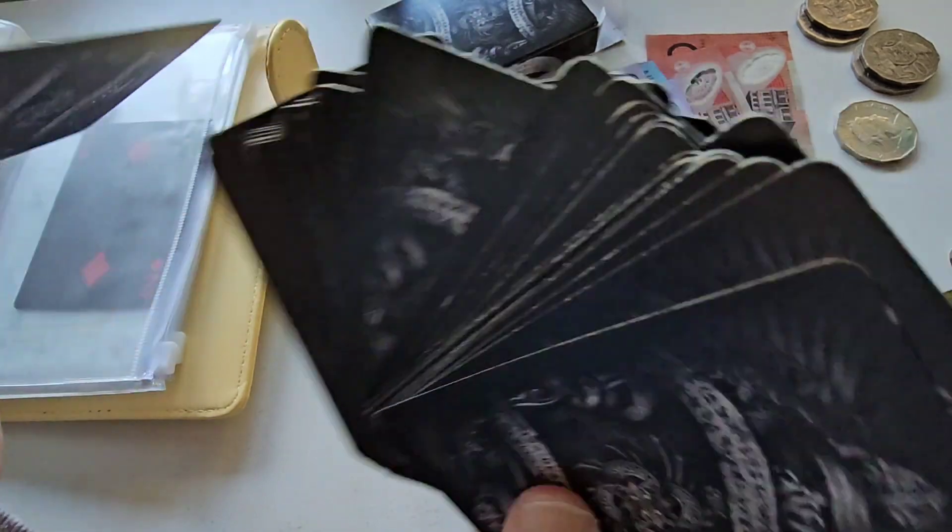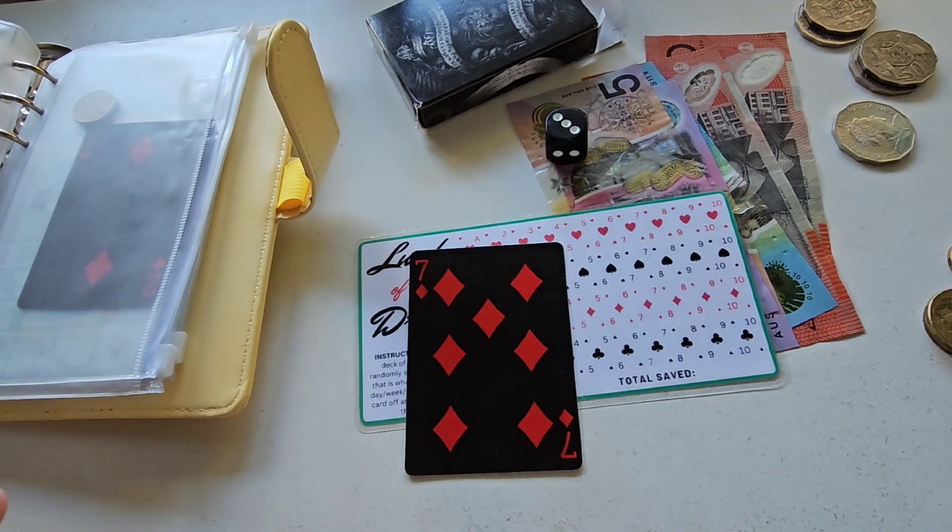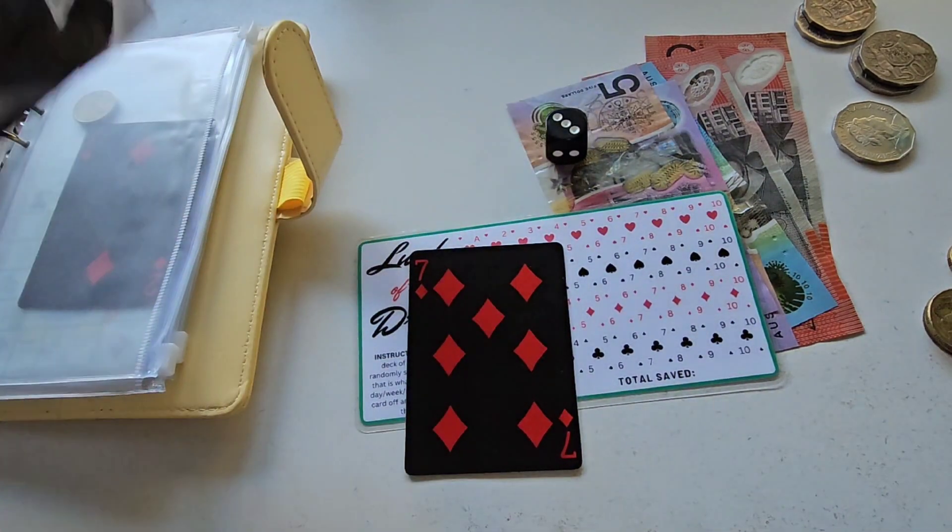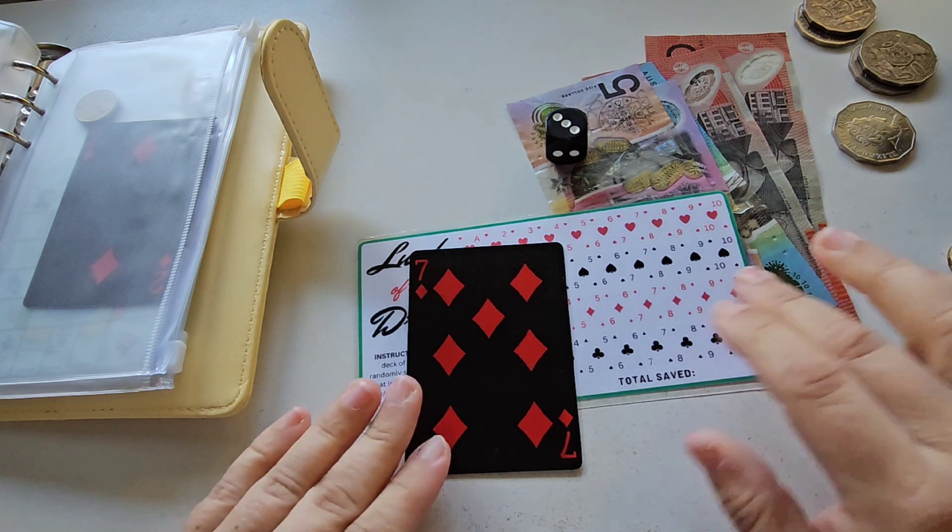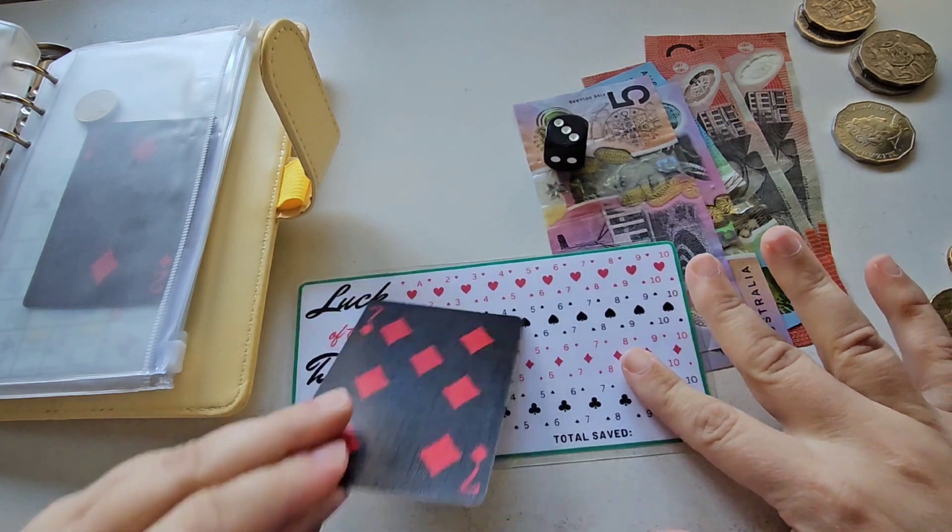So we're picking a card, we got seven of diamonds, so I will mark that one off and then pop seven dollars in for that.